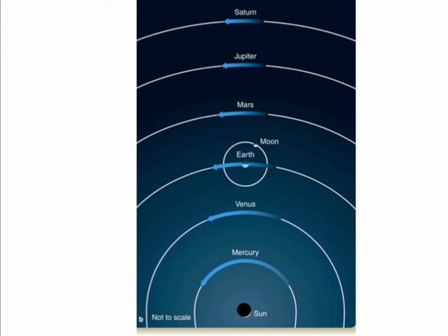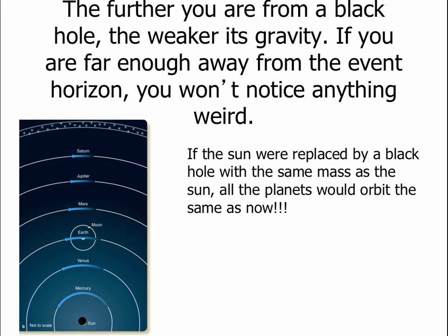The weird stuff for black holes only happens when you're really close to this event horizon, say 10 times the size of the black hole. So the black hole Sun would be three kilometers across. If you are closer than 30 kilometers, weird stuff will happen.